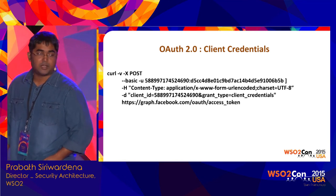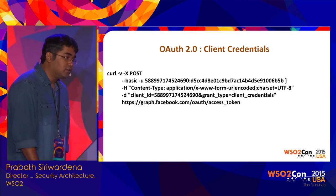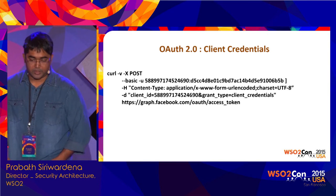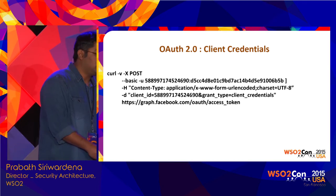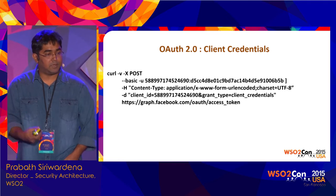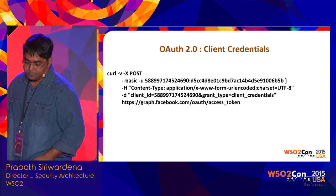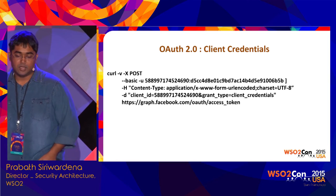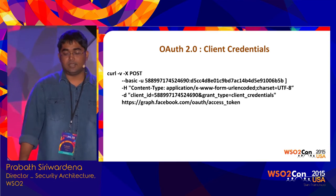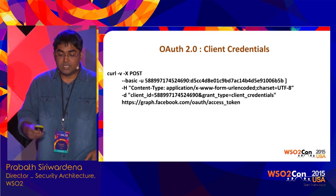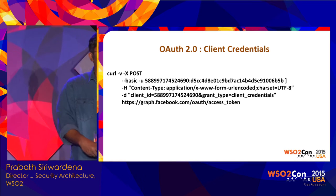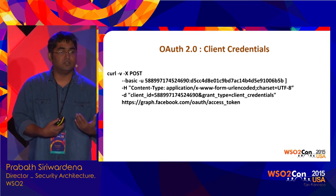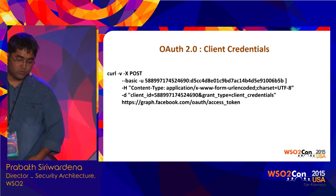OAuth 2.0 comes with four grant types. One is the authorization code grant type — for example, logging into a web app through Facebook. There's the implicit grant type, mostly used for untrusted clients like single-page web applications and mobile applications. Then the client credentials grant type, which is similar to basic auth — you're simply sending client ID and client secret in the basic auth header. This was developed to help people migrating from basic auth to OAuth. It can be used when you are the owner of the resource and want to access it. We do support this in API Manager.